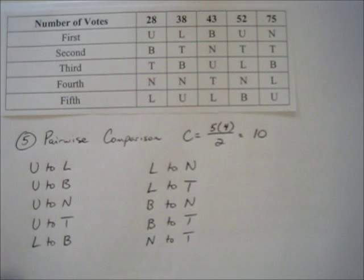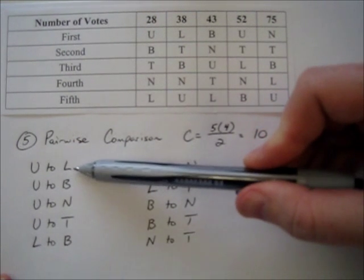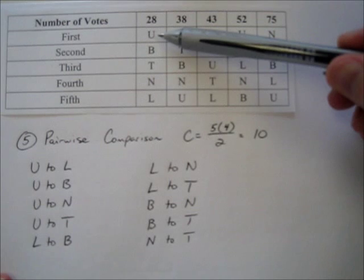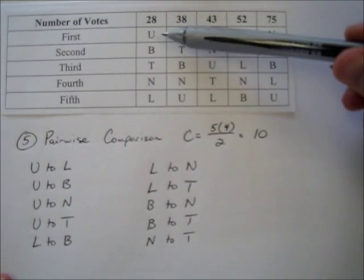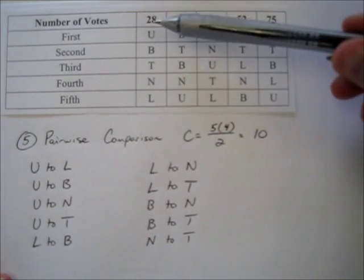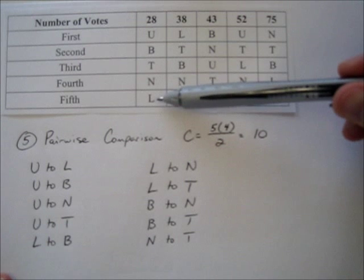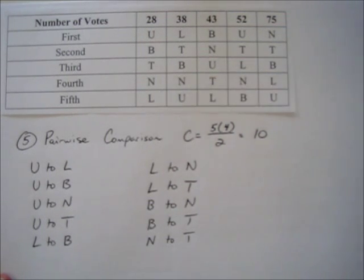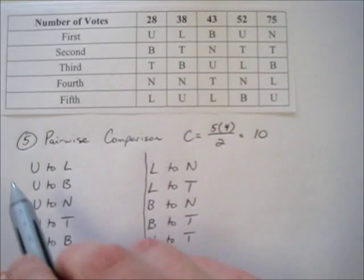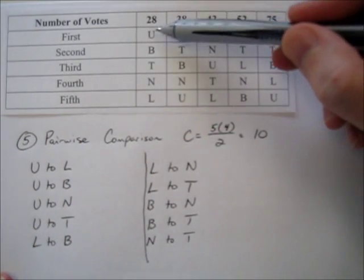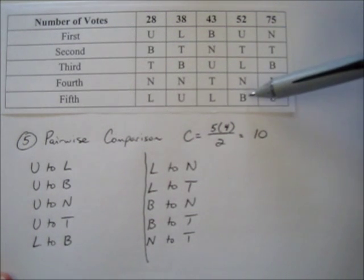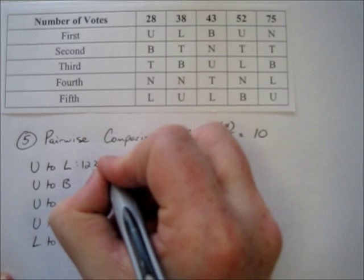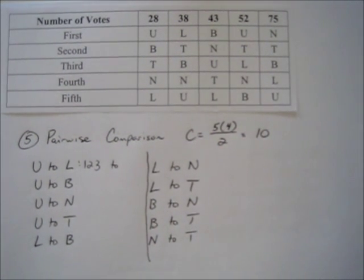In pairwise comparison, for each matchup we only care about the relative ranking of those two candidates. For Usher vs. Lifehouse: the columns where U is ranked higher than L give 28 plus 43 plus 52, which is 123 people preferring Usher. Subtracting from 236 gives 113 preferring Lifehouse. Usher wins that comparison.